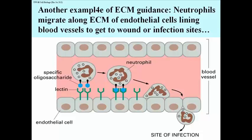These neutrophils recognize receptors called lectins. If you remember, lectins are proteins that recognize and bind to specific sugar residues. The lectins on the endothelial cells can bind to the sugars on the neutrophil surface, attaching the neutrophil to the endothelial cell, which then is able to migrate along the endothelial cell.